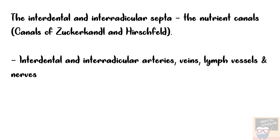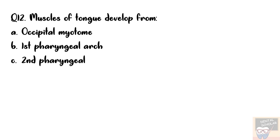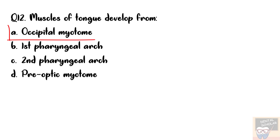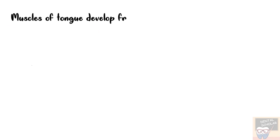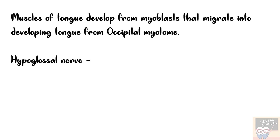Question number 12: Muscles of the tongue develop from — options are occipital myotome, 1st pharyngeal arch, 2nd pharyngeal arch, and pre-optic myotome. The answer is option A, occipital myotome. The muscles of the tongue develop from myoblasts that migrate into the developing tongue from the occipital myotome, and the hypoglossal nerve is the nerve of the occipital myotome, supplying the intrinsic muscles of the tongue.